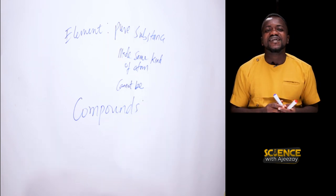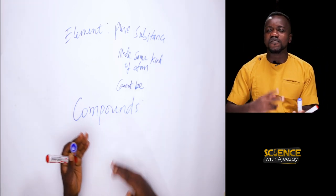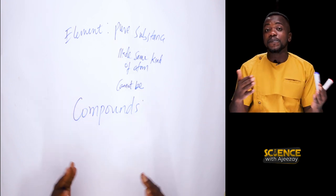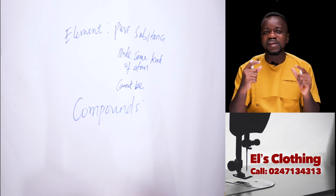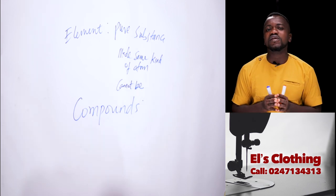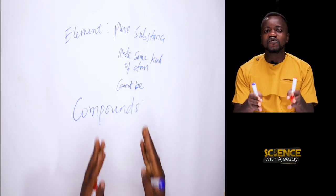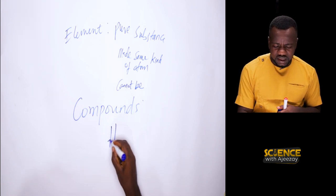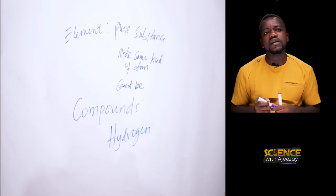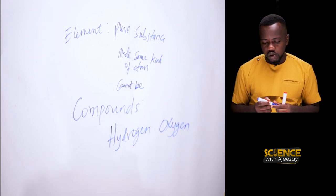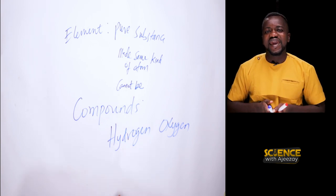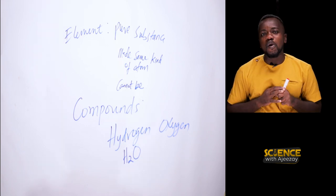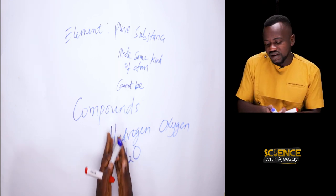A compound is a pure substance formed from the chemical combination of two or more elements. We have already established that an element is a pure substance. Now, a compound is formed from the chemical combination of two or more elements. You can think of an element like hydrogen and then oxygen — once we combine hydrogen and oxygen, we will have water. That is H2O.